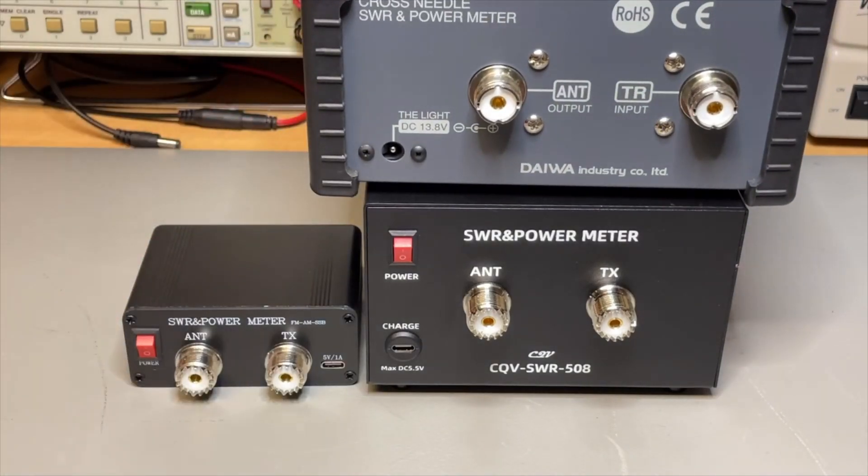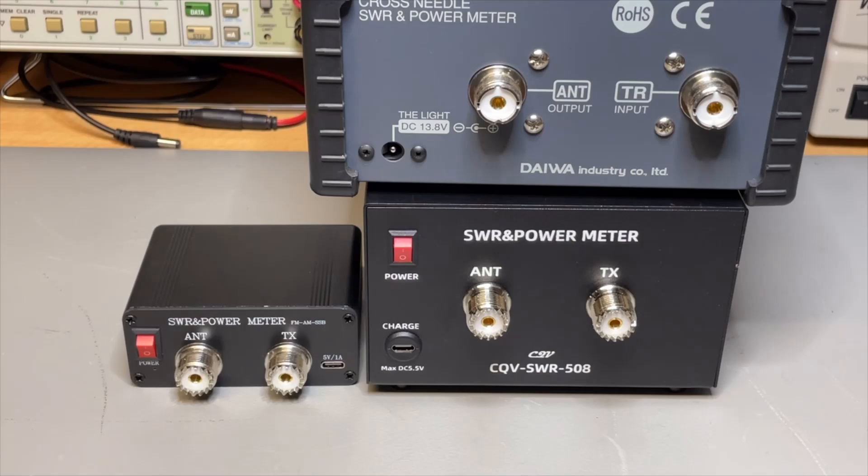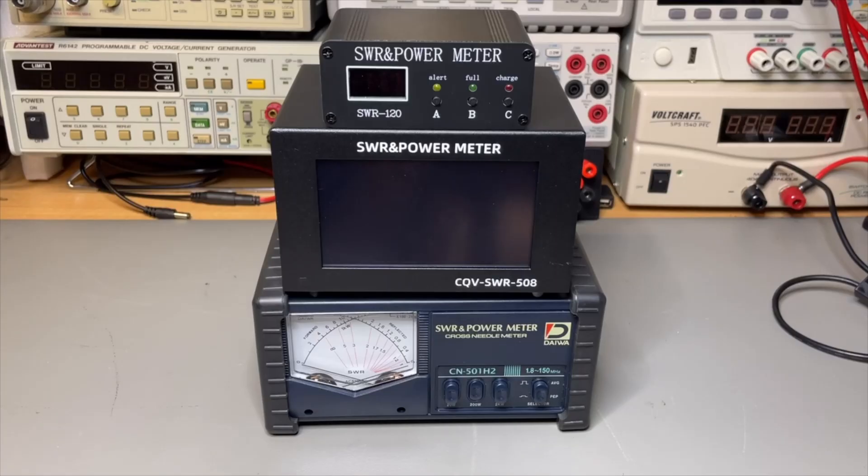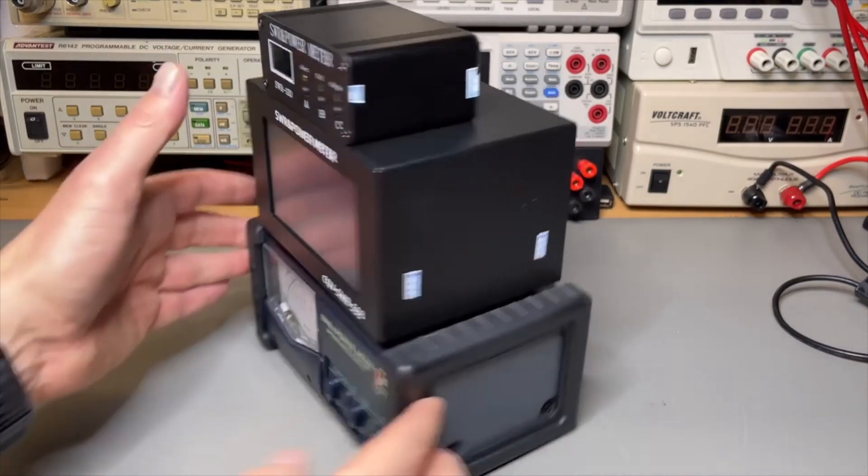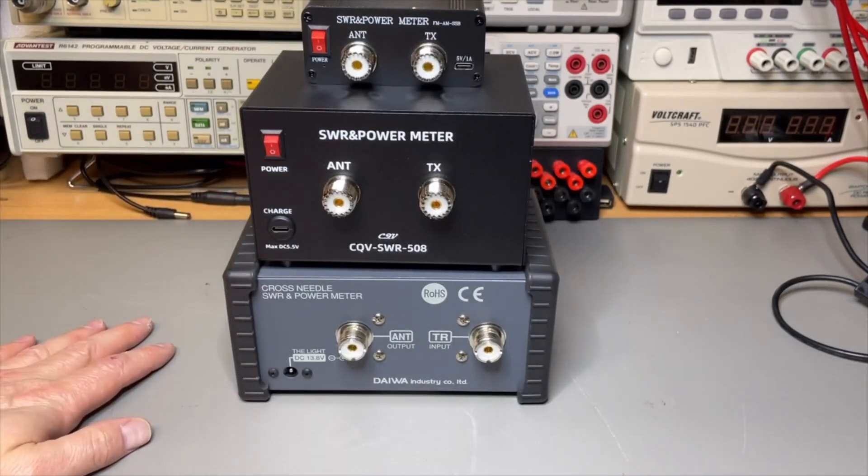We have a Daiwa, same side. So you can just quickly switch over. For scale I put the standard Daiwa in the bottom. And well it is a little bit less wide but it is just as deep.